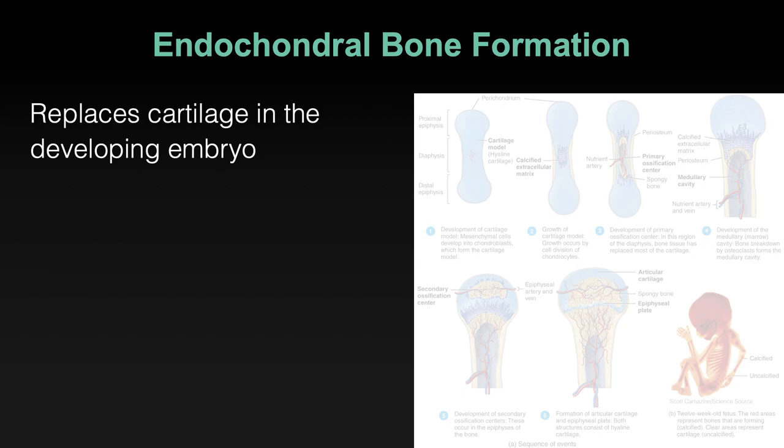We just looked at intramembranous ossification at the end of last class — the way that flat bones are formed. Flat bones have hard compact bone layers on the superficial surfaces, and then a sandwich of spongy bone in the middle, making a pretty durable, lightweight flat sheet of bone.